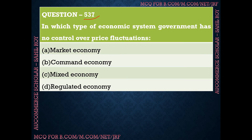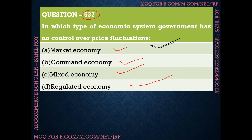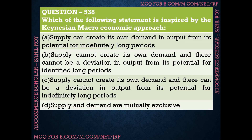Question number 537: In which type of economic system does the government have no control over price fluctuations? Options are: market economy, command economy, mixed economy, or regulated economy. The correct answer is option A — market economy. In a market economy, the government has no control over price fluctuations.